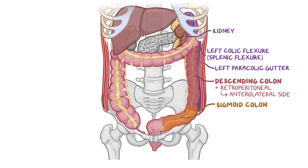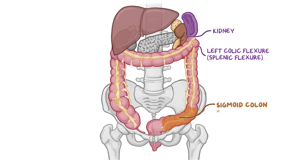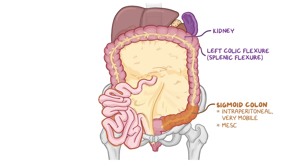In the left iliac fossa, the descending colon ends and the fifth part of the large intestine, known as the sigmoid colon, follows. As it descends towards the third sacral vertebra, the sigmoid colon makes an S-shape as it connects and continues as the rectum. The sigmoid colon is intraperitoneal, very mobile, and has a mesentery called the sigmoid mesocolon.